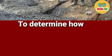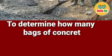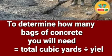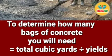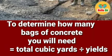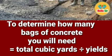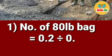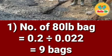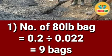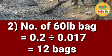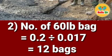Now determine how many bags of concrete you will need by dividing the total cubic yards needed by the yield. At 4 inches thick for a 4x4 slab, you will need 0.20 cubic yards of concrete. Number of 80-pound bags: 0.2 divided by 0.022 equals 9 bags. Number of 60-pound bags: 0.2 divided by 0.017 equals 12 bags.